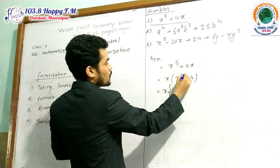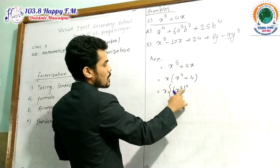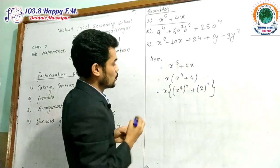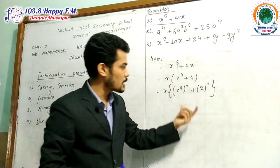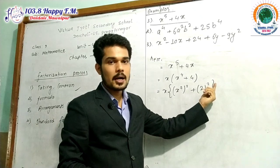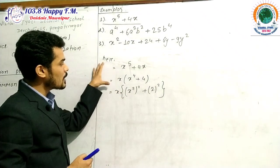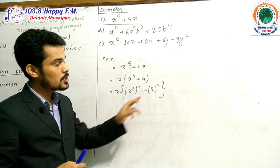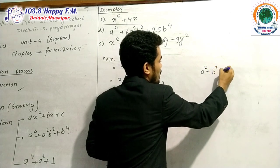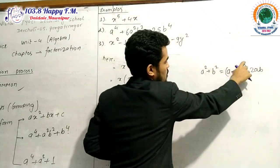Now, we can write x⁴ as (x²)² — that will be 2 into 2 which gives 4 — and 4 can be written as square of 2. So this algebraic expression is in the form A² + B², where A² + B² does not have a direct factor form. The formula for A² + B² is (A + B)² minus 2AB, and it has another form also: (A − B)² + 2AB.